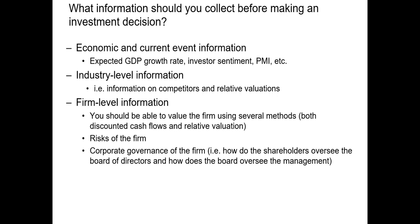The first — macro level information — refers to statistics like the expected GDP growth rate, or investor sentiment which we talked about in the last class, or perhaps the Purchasing Managers Index or PMI, which is a measure of expected economic trends in manufacturing based on a survey of purchasing managers.